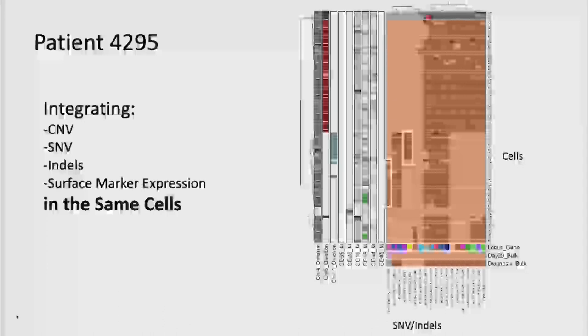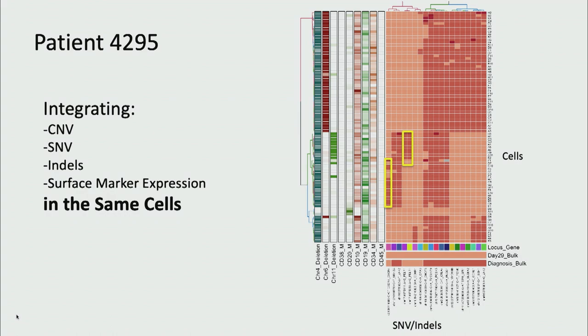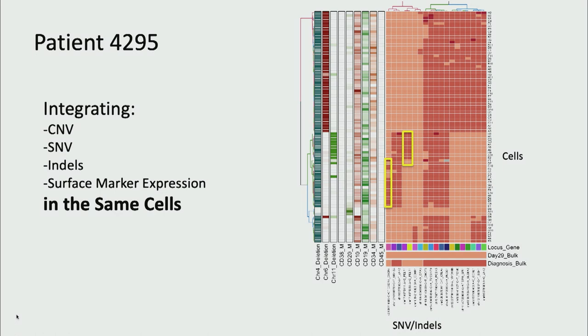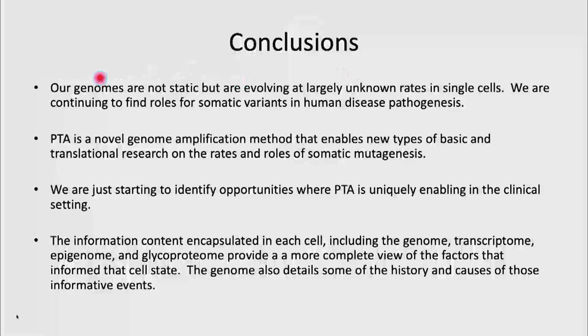We're working to develop a computational framework with Dan Landau's group at the New York Genome Center to ask: given this tree of heritability, what things are inherited down the tree and what things are truly plastic? The goal is to understand how the disease evolved between initial diagnosis and treatment, and really what features are static or heritable versus plastic — as we think about things that could be used as diagnostics or drug targets.